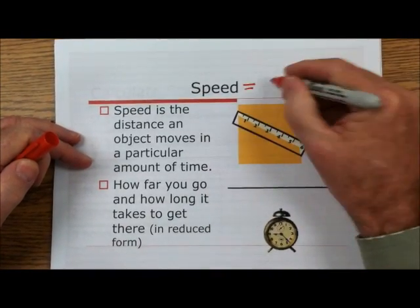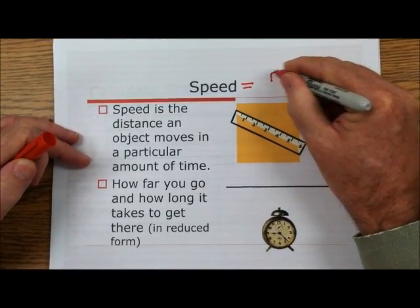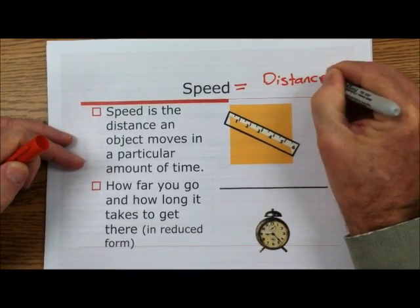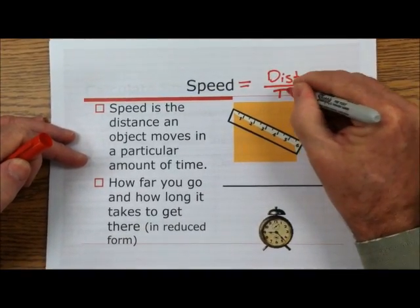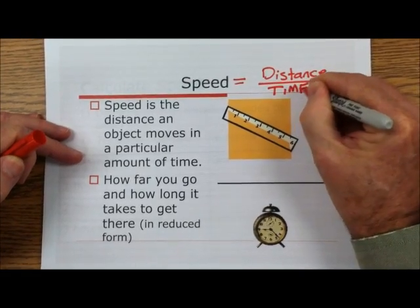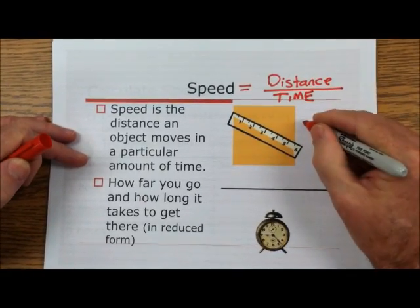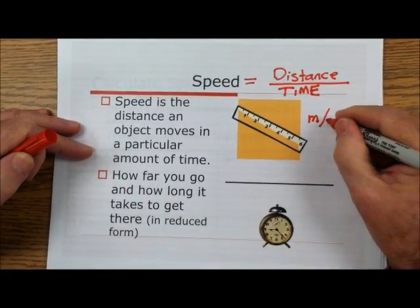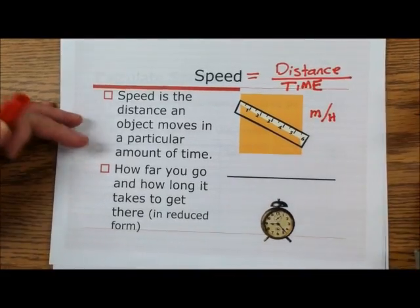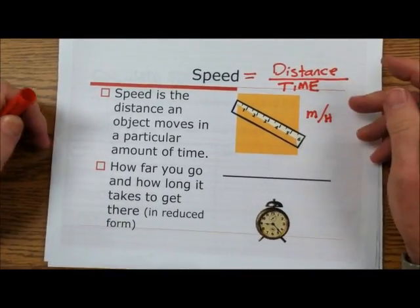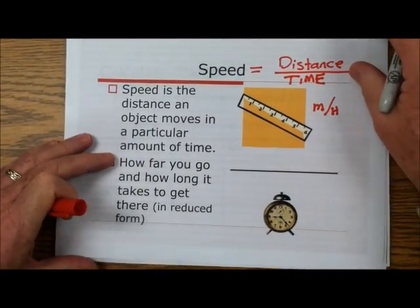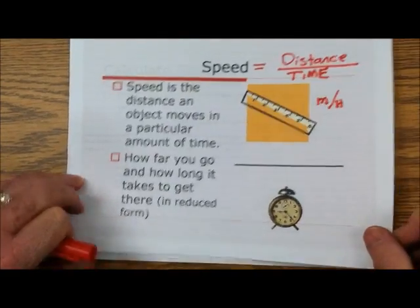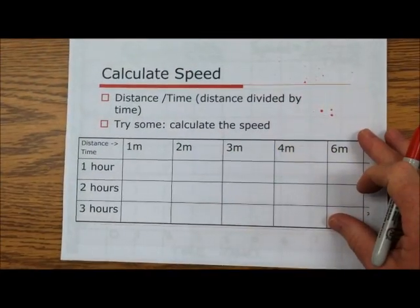So speed is equal to distance divided by the amount of time it takes to get there. For example, miles per hour — that would be one way you would say that, like you usually travel miles per hour. So write that down and let's look at some examples.